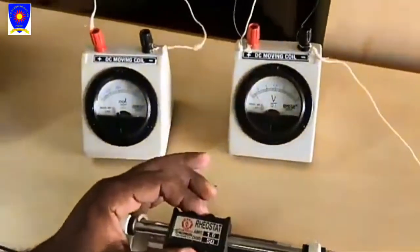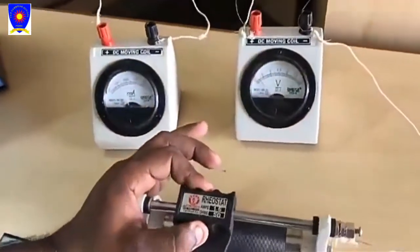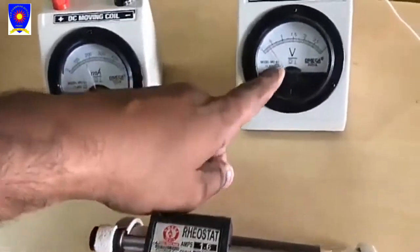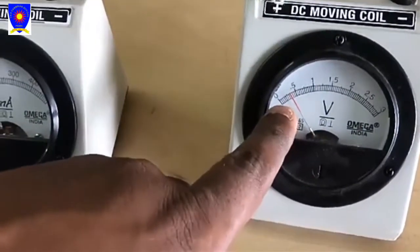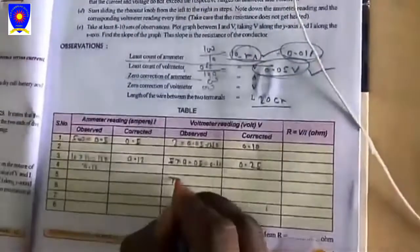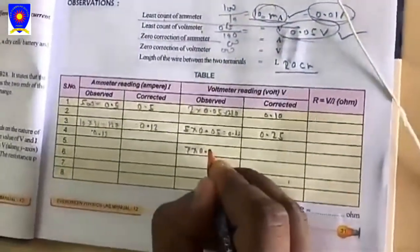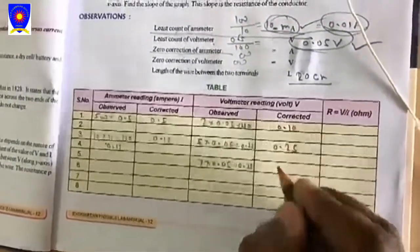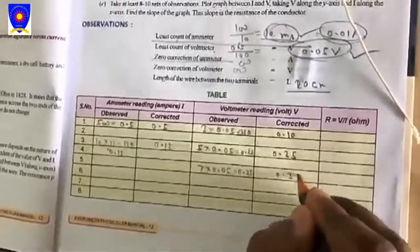For third reading, slide it again slowly. Now note down this position. We are looking that the division is 7. Write here 7 into least count, which is 0.05, so it is 0.35 volt. Its corrected value will also be 0.35.